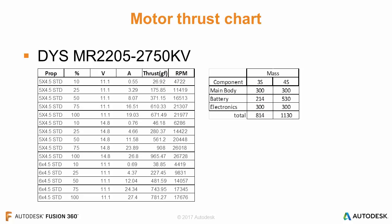The DYS motor we're talking about here is the MR2205-2750kV. We already know that the 22 is the diameter of the stator, the 05 is the height of the stator, and the 2750kV constant is multiplied by the voltage to give us the max RPM unloaded. DYS provides thrust charts with their motors so we can reference how our battery choices are going to affect things like thrust as well as which propellers we want to choose.